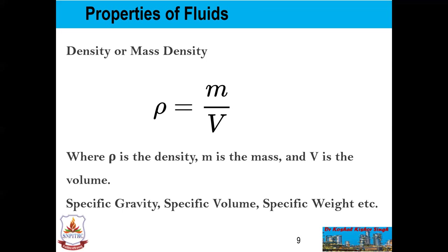Specific weight or weight density of a fluid is the ratio between the weight of a fluid to its volume — weight per unit volume. It is denoted by the symbol w. Mathematically, w = weight of fluid / volume of fluid = (mass × g) / volume = ρg. The value of specific weight for water is 9.81 × 1000 N/m³ in SI units.